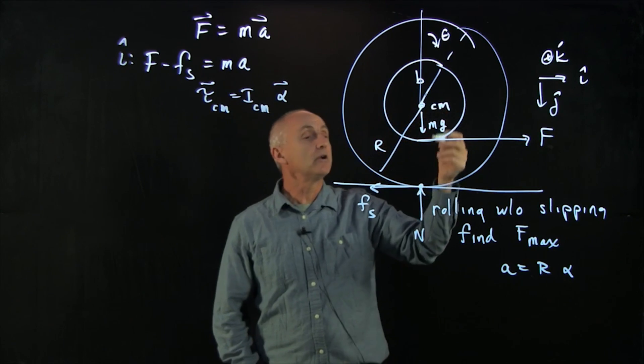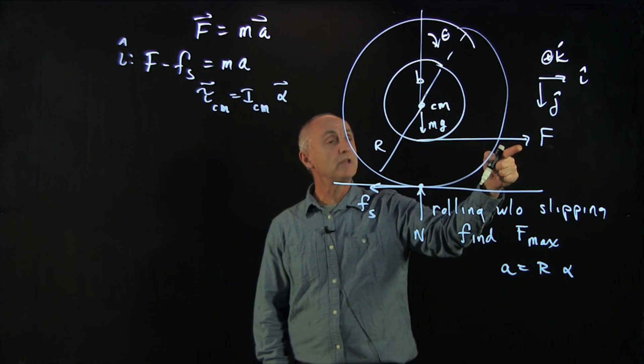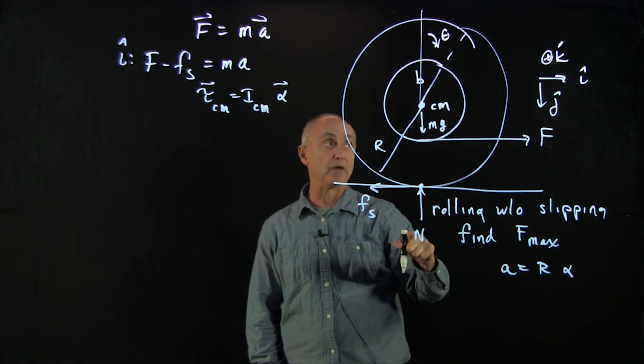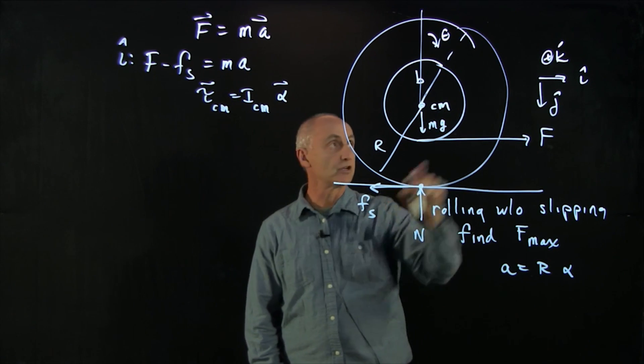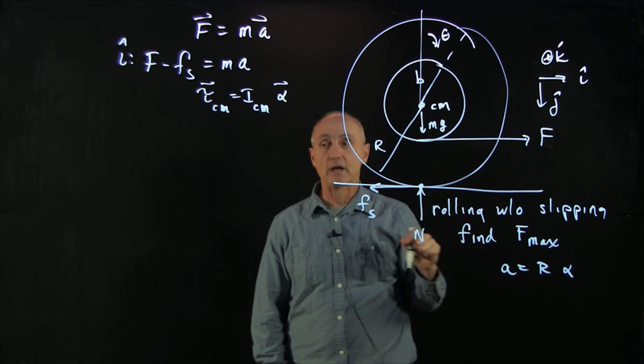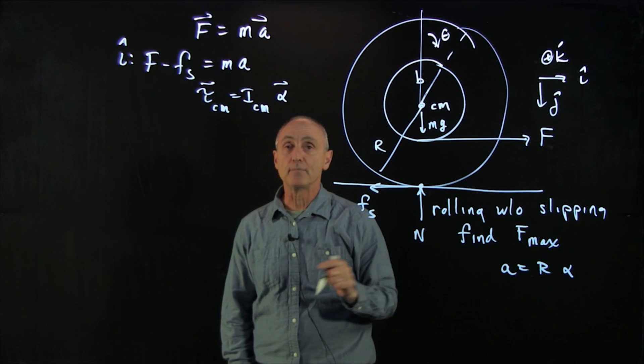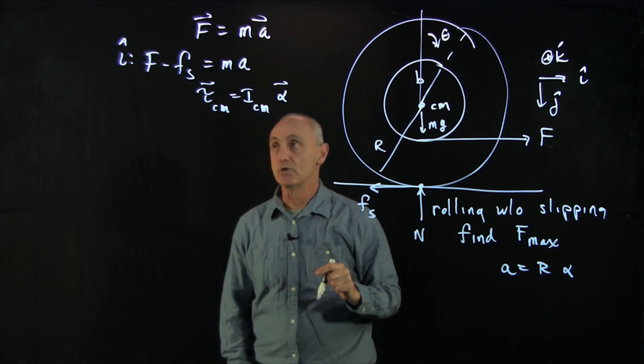Now here, both the pulling force and the static friction both exert torques about the center of mass. The static friction will exert a torque in the direction k hat. And the pulling force will exert a torque in the minus k hat direction.